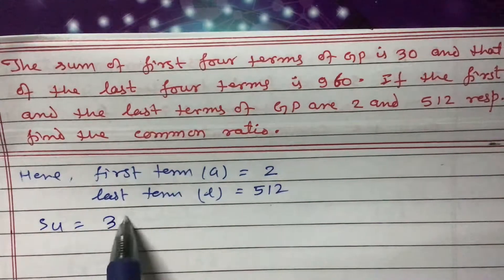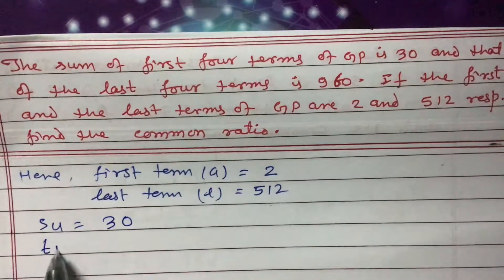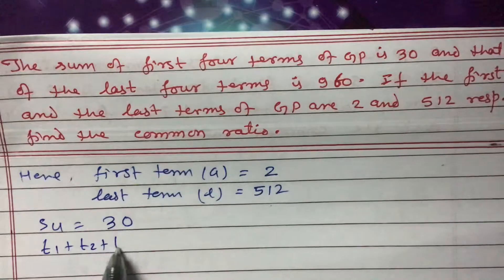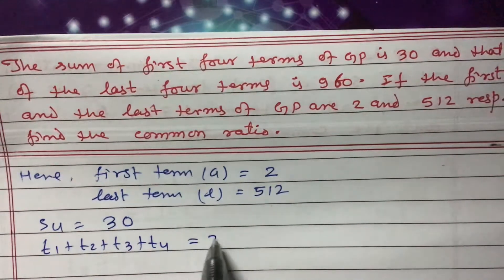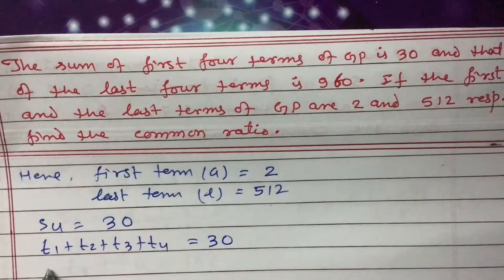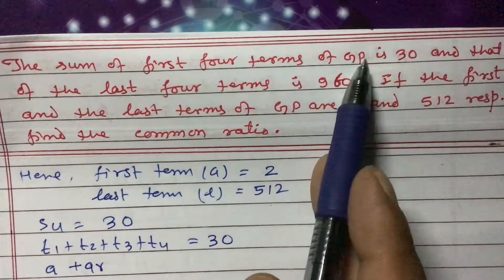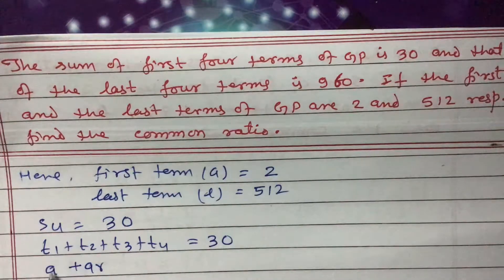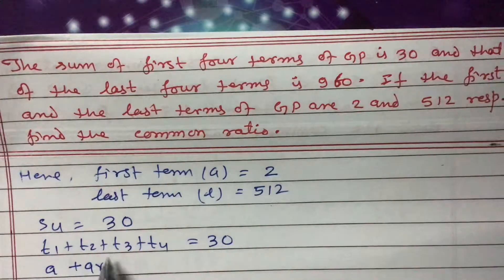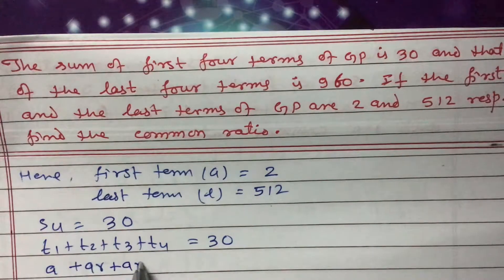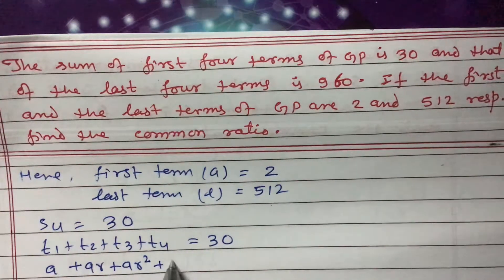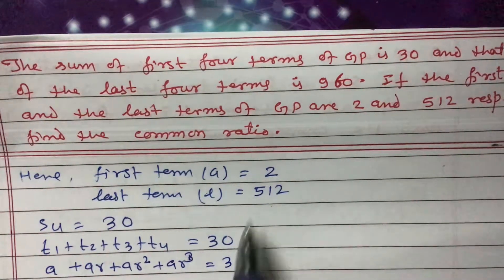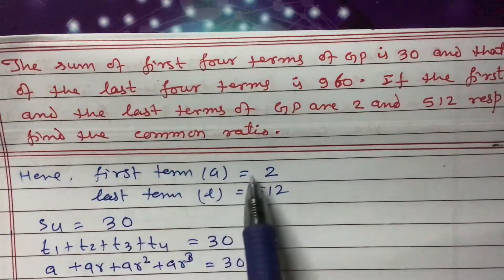So S₄ equals 30, which means t1 plus t2 plus t3 plus t4 equals 30. Now, in a GP, t1 is a, t2 is ar, t3 is ar², and t4 is ar³. So we have a + ar + ar² + ar³ equals 30.